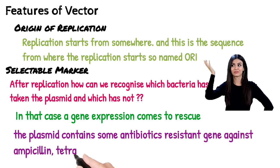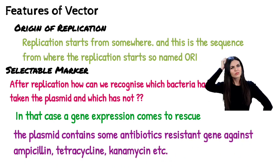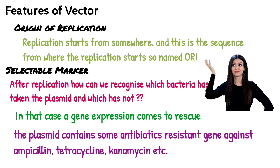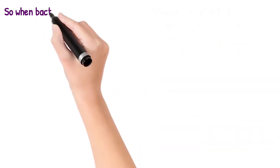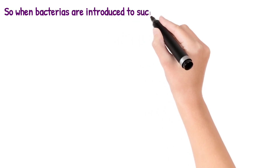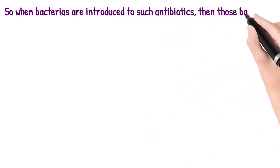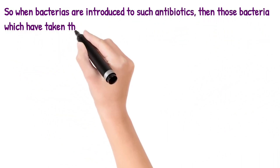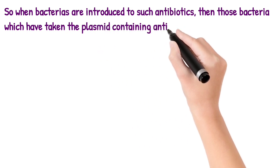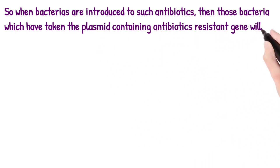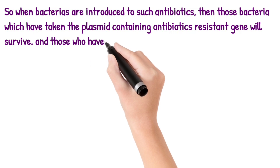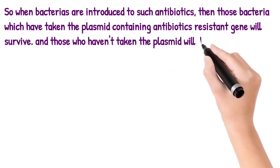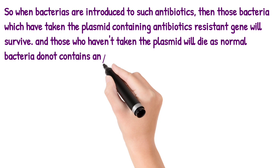Against like ampicillin, tetracycline, chloramphenicol, etc. So when bacteria are introduced to such antibiotics, then those bacteria which have taken the plasmid containing antibiotic resistant gene will survive, and those who haven't taken the plasmid will die.